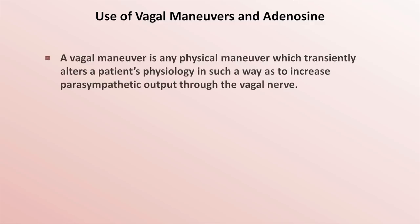There is one more aspect to making an accurate diagnosis to review: the diagnostic use of vagal maneuvers and a medication called adenosine. A vagal maneuver is any physical maneuver which transiently increases parasympathetic output through the vagal nerve. This includes the Valsalva maneuver, in which a patient forcefully attempts to exhale against a closed airway. Rather than asking the patient to 'bear down,' I prefer to use a clean syringe without a needle, depress the plunger completely, and ask the patient to blow the plunger out as hard as they can — which produces the same results as a traditionally performed Valsalva maneuver.